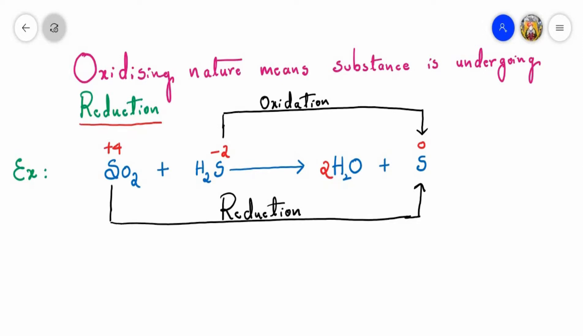Now hydrogen on the product side — in H2O there are four hydrogens, so hydrogen needs to be balanced on the left-hand side; I'll write two here. Now sulfur on the left-hand side becomes three: two sulfur from H2S and one sulfur from SO2, so therefore it is three sulfur total.